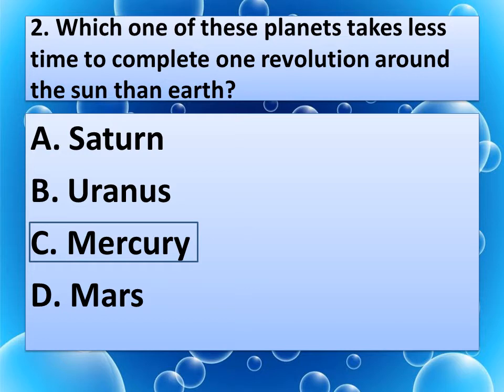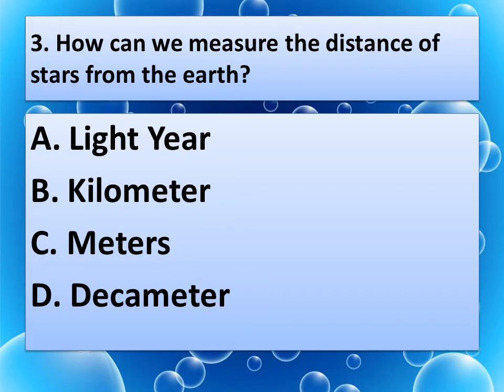Now next question. How can we measure the distance of stars from the Earth? Options are A. Light year, B. Kilometer, C. Metres, D. Decameter. Think about the correct answer. And the correct answer is A. Light year.